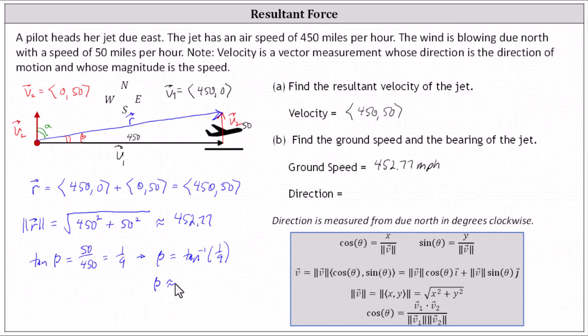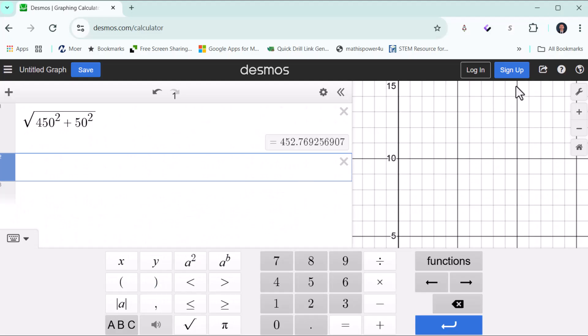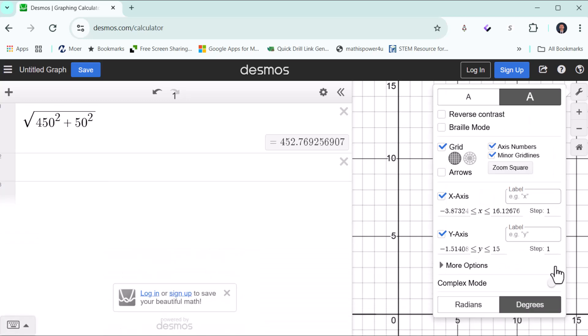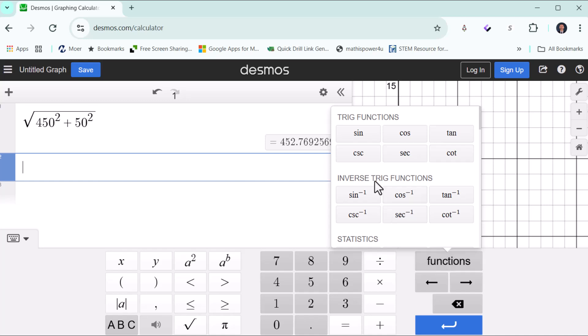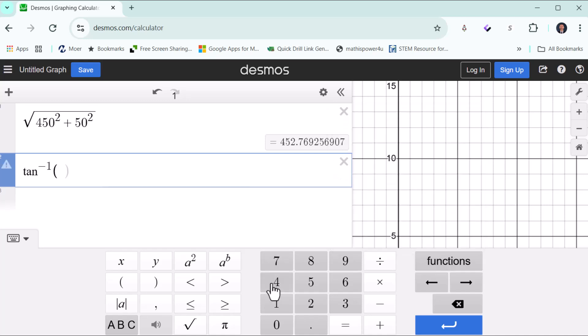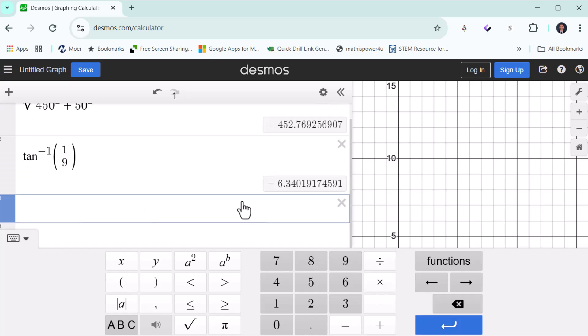It's important to make sure the calculator is in degree mode. So checking the mode. I am in degree mode. For inverse tangent, click functions. And then inverse tangent one divided by nine. Enter. Beta is approximately 6.34 degrees.